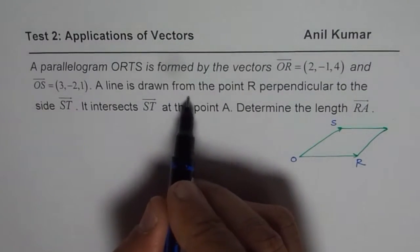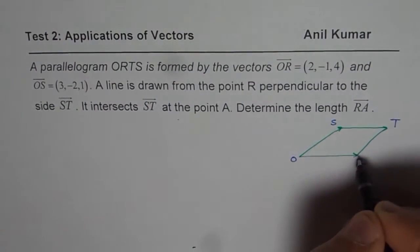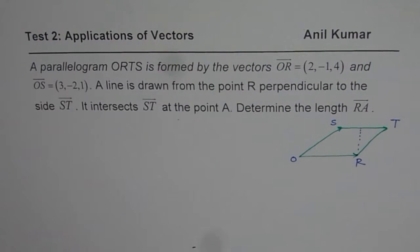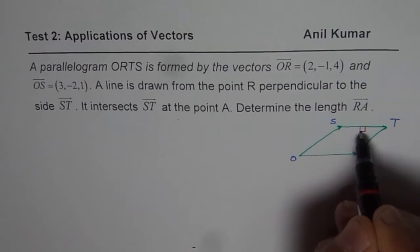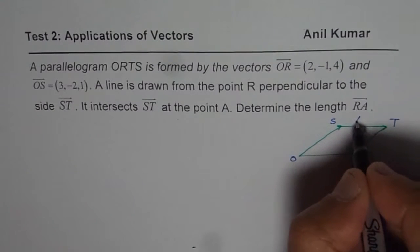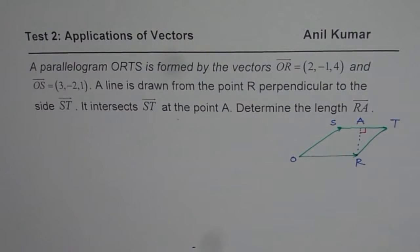Now it says a line is drawn from point R perpendicular to ST. So this point is ST and we are drawing a line perpendicular from R to ST. So let us say this is the line which is perpendicular to ST. And it intersects ST at point A, so that becomes point A for us. You need to find RA. So that is the question.